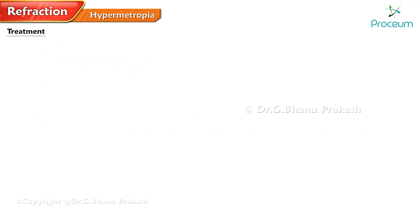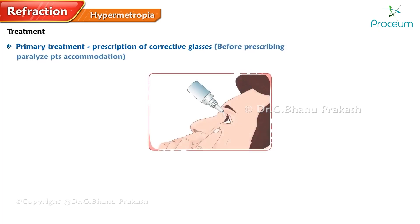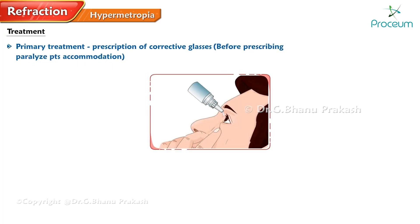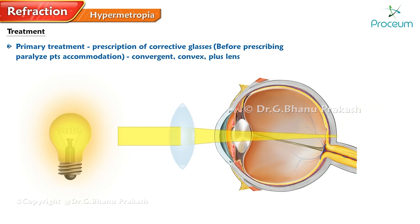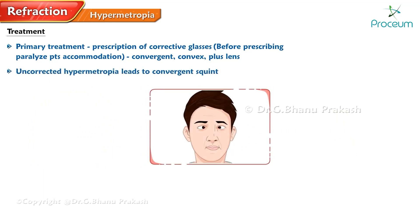The primary treatment for hypermetropia is the prescription of corrective glasses. Before prescribing the glasses, the patient's accommodation needs to be paralyzed. The glasses prescribed are usually convergent convex plus lenses. It's crucial to correct hypermetropia, as uncorrected hypermetropia can lead to convergent squint, a condition where the eyes are not aligned properly, resulting in double vision and other visual problems.